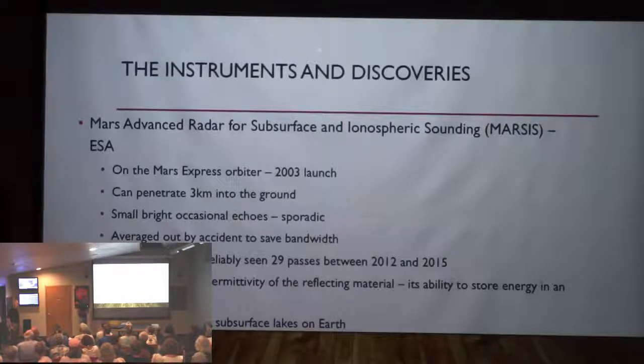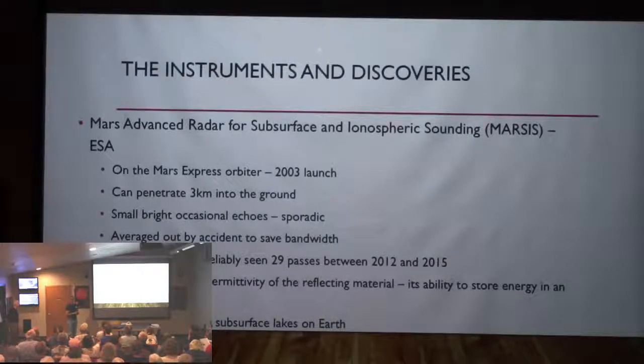And somebody got curious enough to really look into it, and they saw that the algorithm on the spacecraft in order to save data transmission bandwidth back to Earth was averaging the data. And depending on how the pass hit this possible underground lake, it would get averaged out, and that's why it would vanish. So they set aside a chunk of memory, send a little update, just like you get to your windows. They send an update to the software out to the spacecraft, and 29 passes between 2012 and 2015 saw the bright spots.